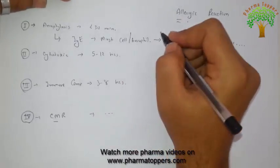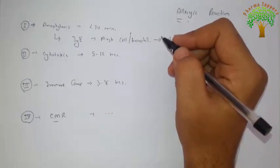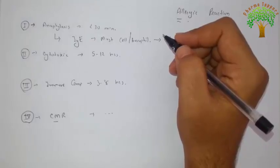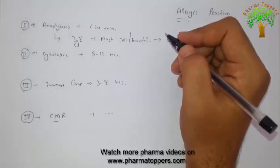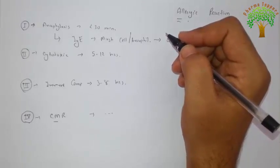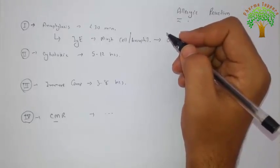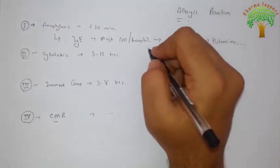Examples of anaphylaxis reactions generally occur due to some drugs. A well-known example is penicillin, which can cause anaphylactic shock due to its fragments. Snake venom also causes anaphylactic shock. Allergic conditions where anaphylactic shock is possible include hay fever and asthma.